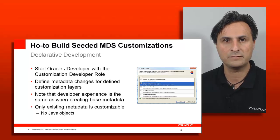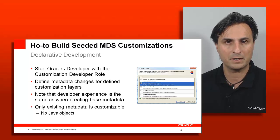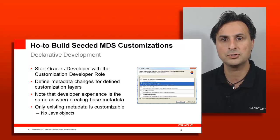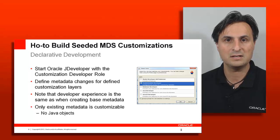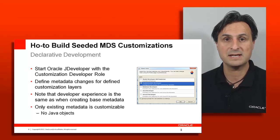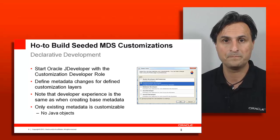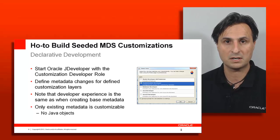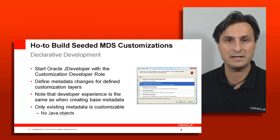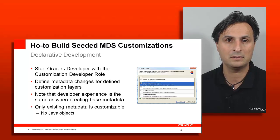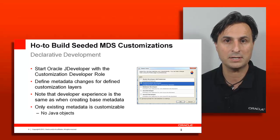In the customization developer view in JDeveloper, you can select the layer and apply changes to that specific layer.